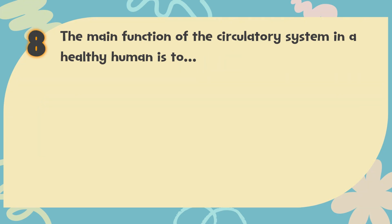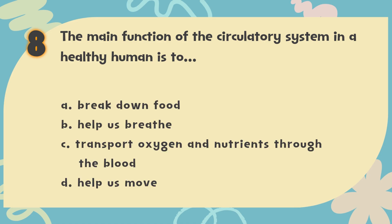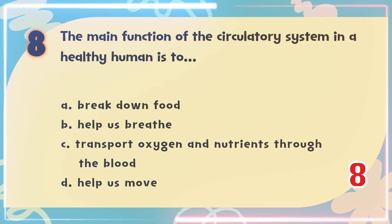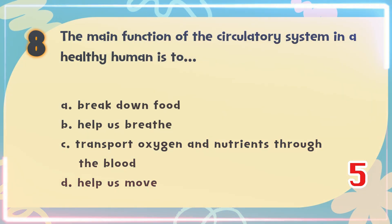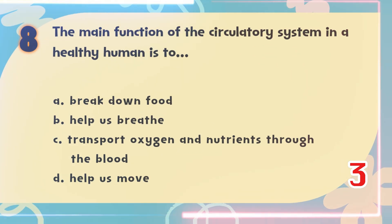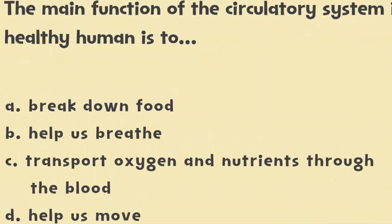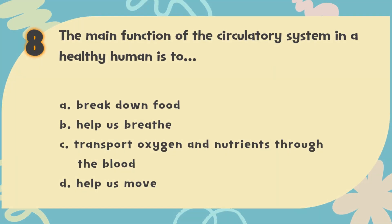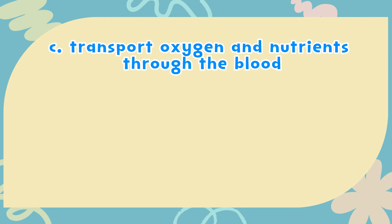Number 8: The main function of the circulatory system in a healthy human is to — A. Break down food, B. Help us breathe, C. Transport oxygen and nutrients through the blood, D. Help us move. The correct answer is C. Transport oxygen and nutrients through the blood.